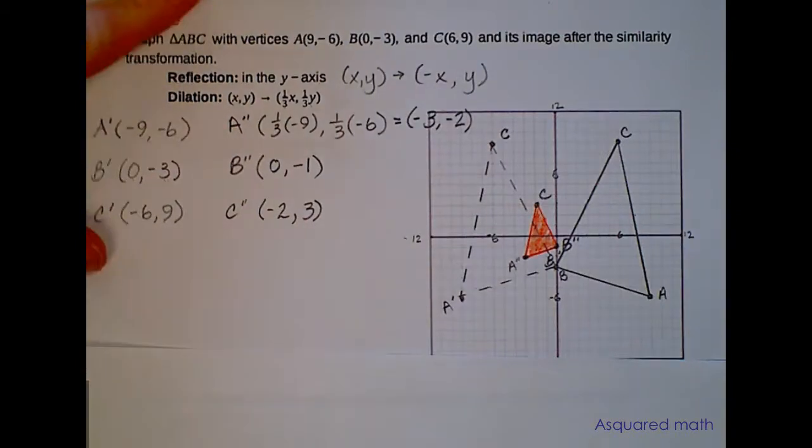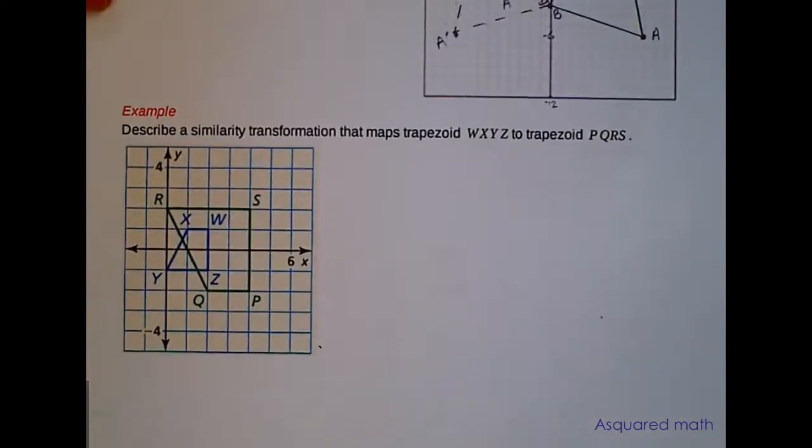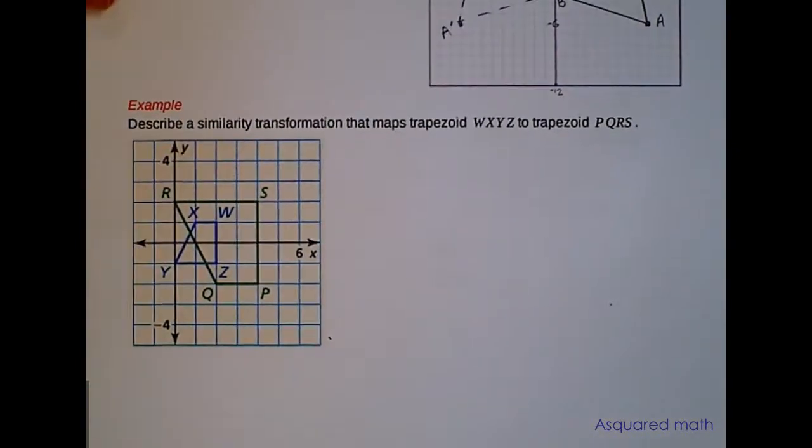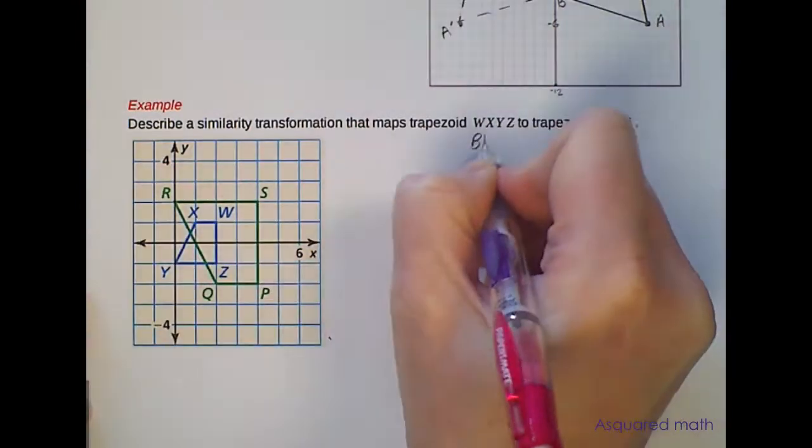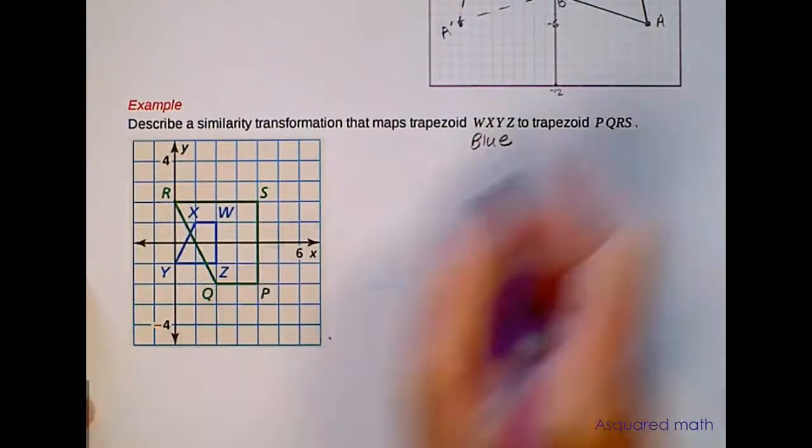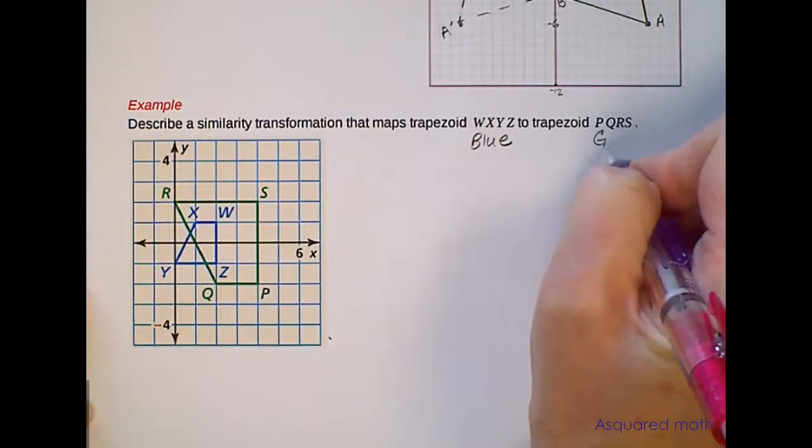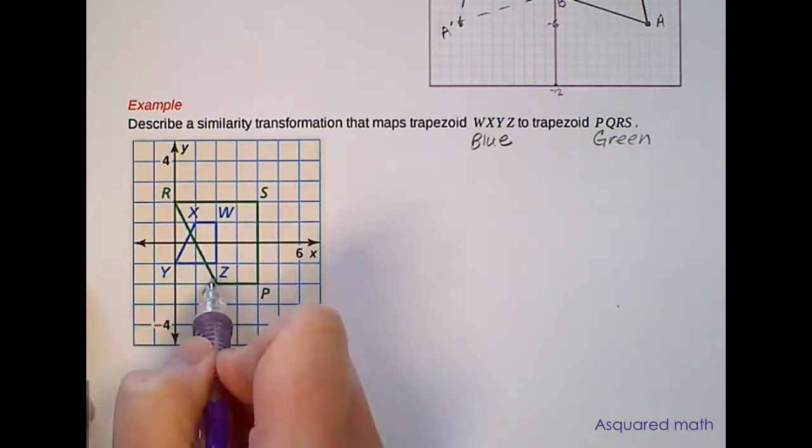If we take a look at another example this one asks us to describe a similarity transformation that maps trapezoid WXYZ to trapezoid PQRS. So if we take a look WXYZ is this blue smaller trapezoid and PQRS is the green one. So we're going from blue to green so we are definitely enlarging our figures so we have to figure out a scale factor here.